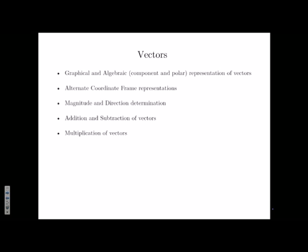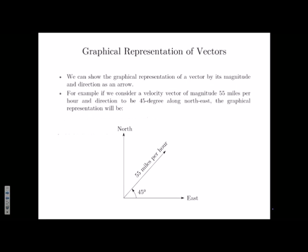We look at the alternate coordinate frame representation, which is very important because this is one thing that I find students struggle with quite a bit. Magnitude and direction determination is just a matter of definition, how we add and subtract vectors, and how we multiply vectors. So those are the things that we want to look at.